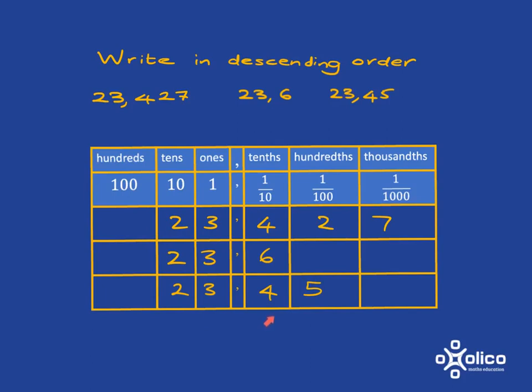Now, we move to the tenths. And here, we can see this one has got 6 in the tenths position. And that's bigger than the other two. So, this one is the biggest. Then, we move on from there to the hundredths position. And here, we've got a 5 versus a 2. So, this is a bigger one than this. And so, this is the second position. And this is the third.